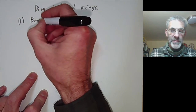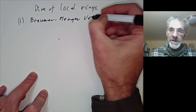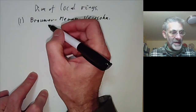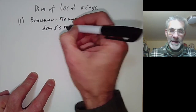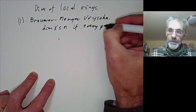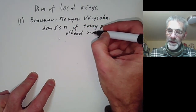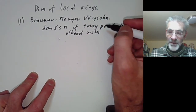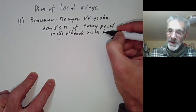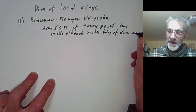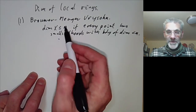First, there is the definition due to Brouwer, Menger and Uryson. You define the dimension of a space X to be less than or equal to n if every point has arbitrarily small neighbourhoods with boundary of dimension less than n. We say that a local ring has dimension n if its spectrum has dimension n.